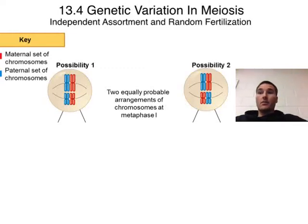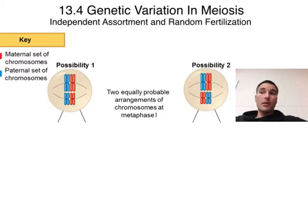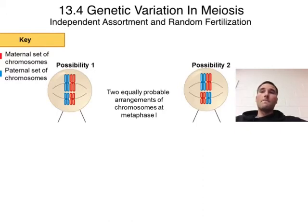Alright gang, we have our video here for the last section, section 4 of chapter 13, and we've been going through meiosis. Now we are going to look at some of the strengths of meiosis: genetic variation. If we compare it to mitosis, if we were to make a new generation of organisms through mitosis, they would be clones of the parents with no genetic variation, which can cause some problems. Fortunately we do meiosis followed by fertilization or sexual reproduction, and so we get some variation. We're going to go through three different ways that variation shows up.